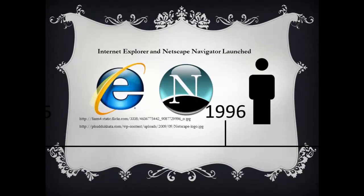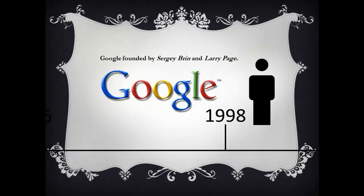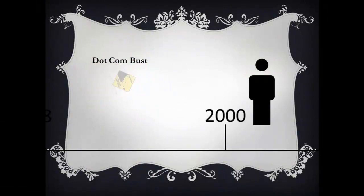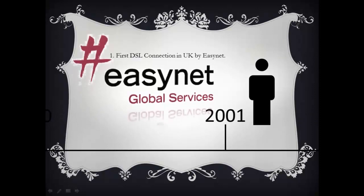In 1996, Internet Explorer and Netscape Navigator were launched. Internet Explorer was offered as part of Microsoft Windows. In 1998, Google.com was launched. Google.com offers web searching, cloud computing, and advertising business. In 2000, there was a dot-com bust. It means the largest dot-com domains were registered at that era. In 2001, EasyNet was the UK's first company that provided DSL over unbundled local loop.